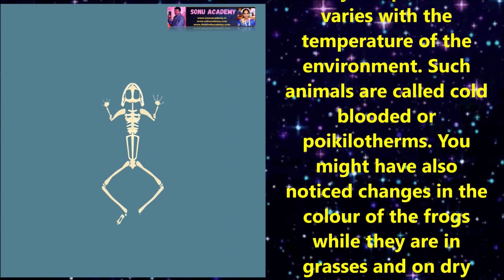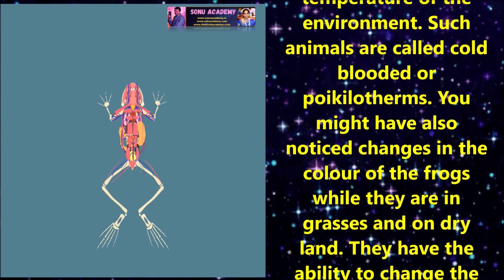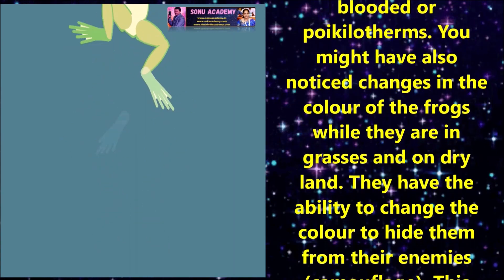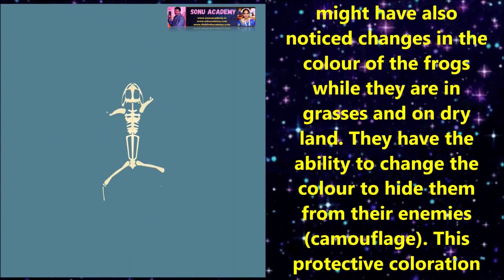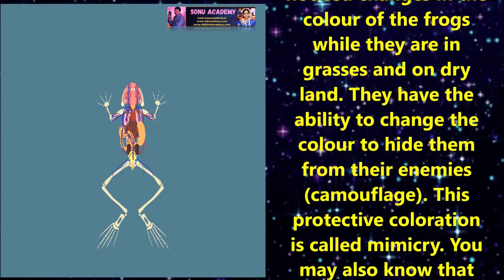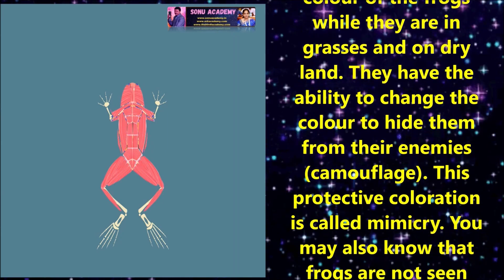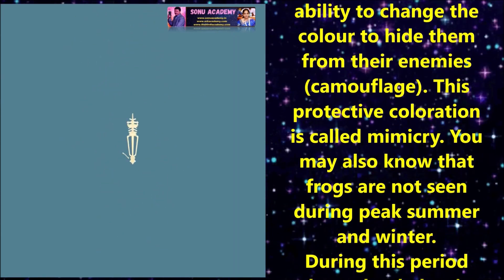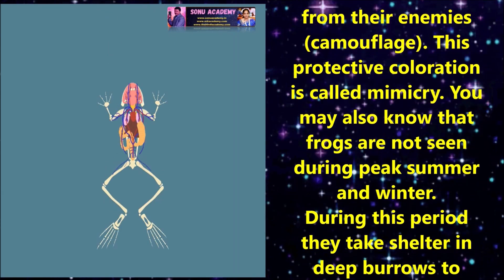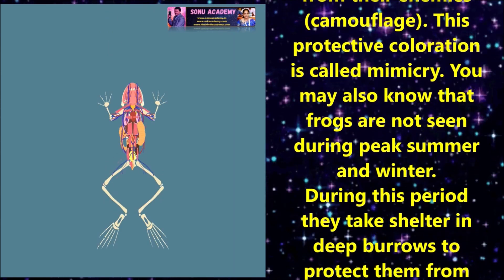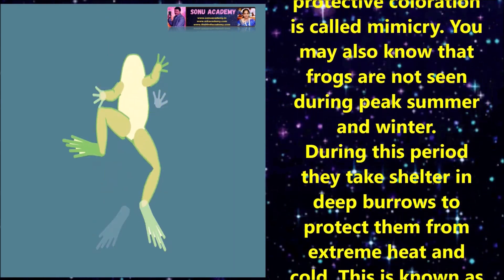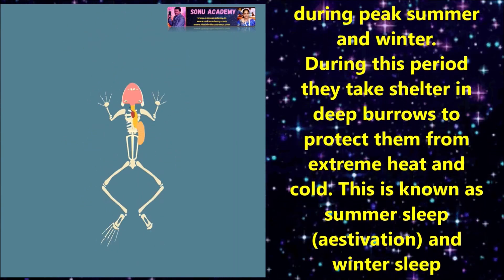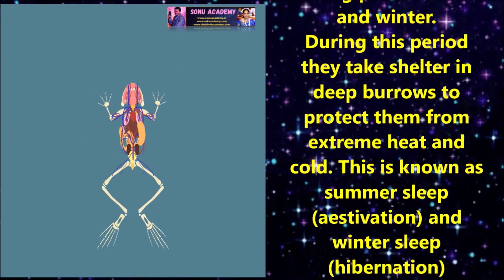Such animals are called cold-blooded or poikilotherms. You might have also noticed changes in the color of the frog while they are in grasses and on dry land. They have the ability to change their color to hide from their enemies. This protective coloration is called mimicry.